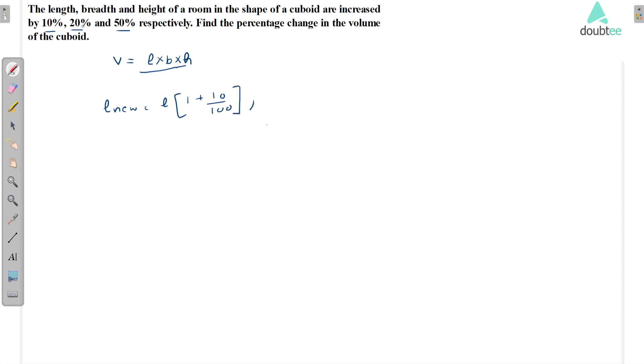And breadth has been increased by 20%, so the new breadth will become b times (1 plus 20/100).